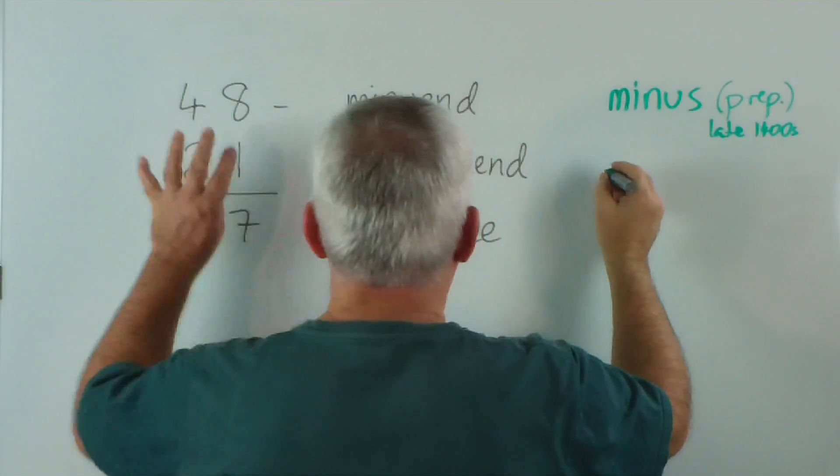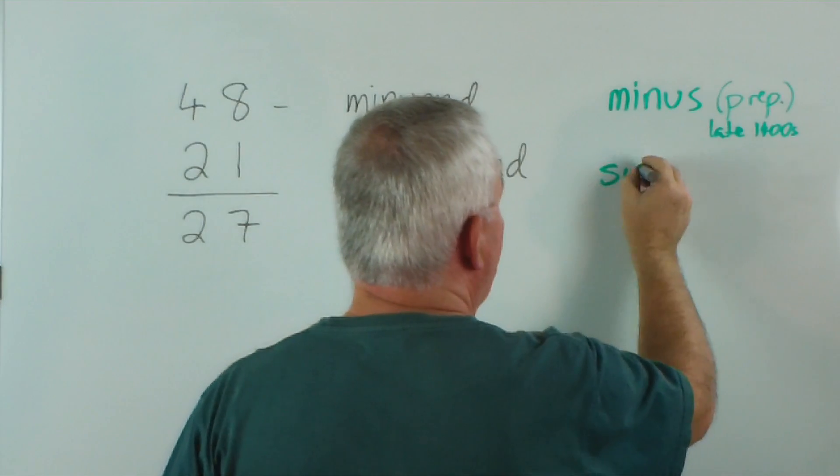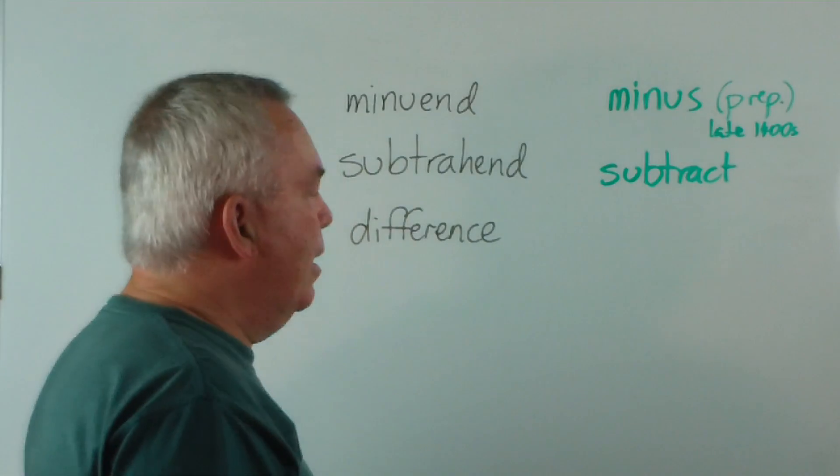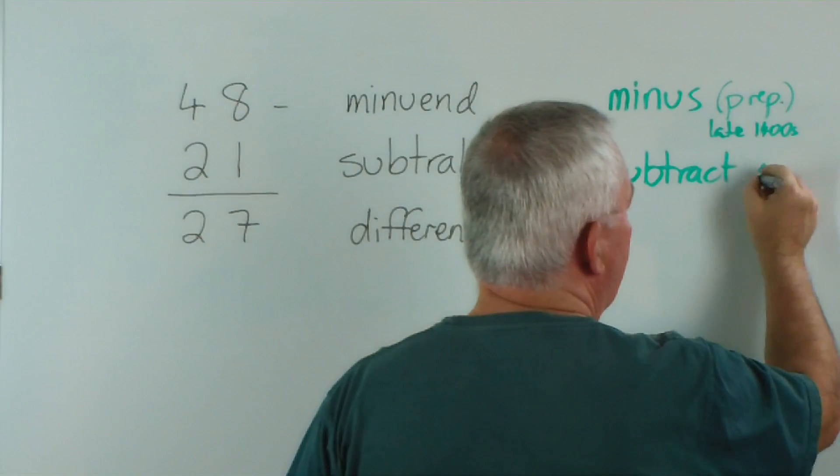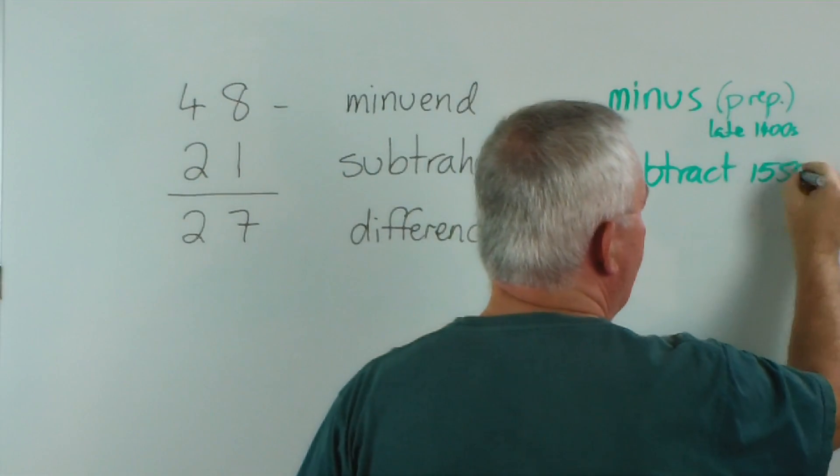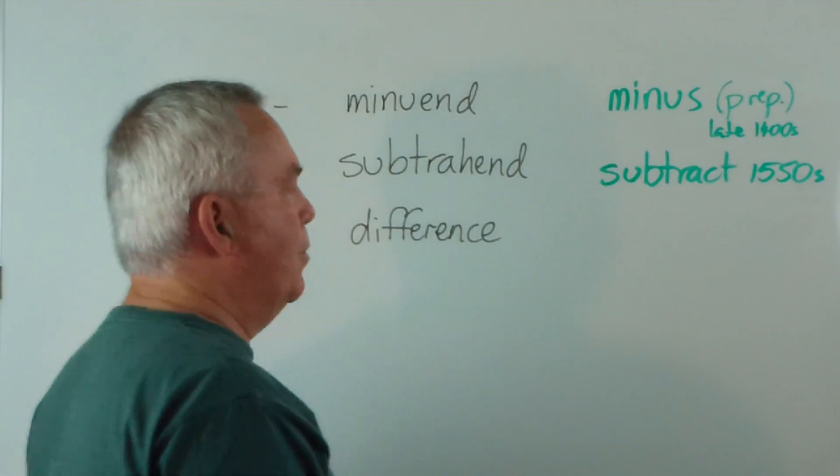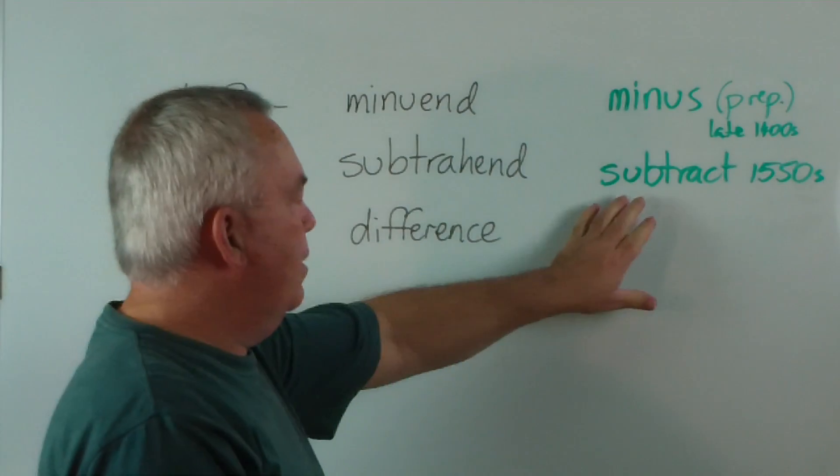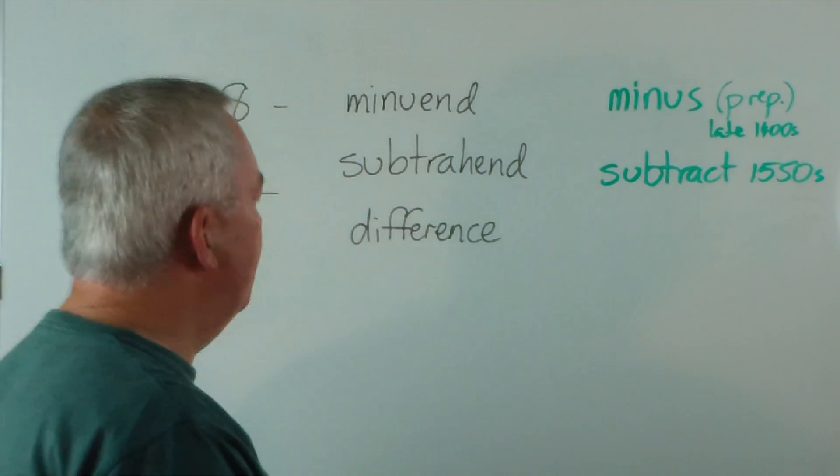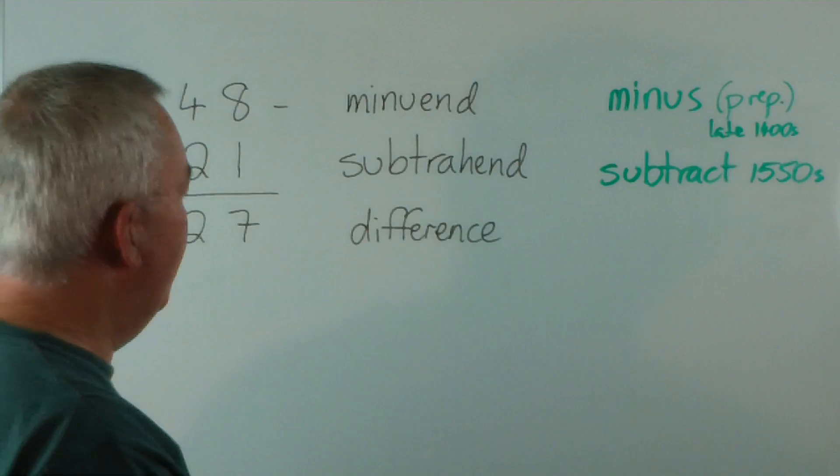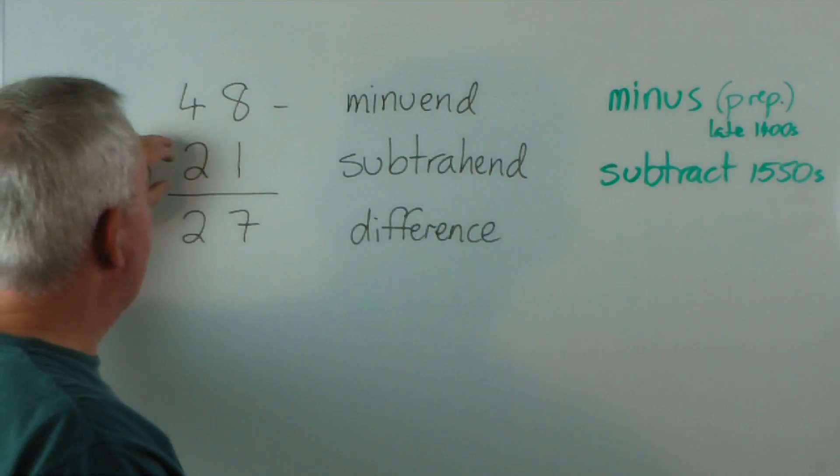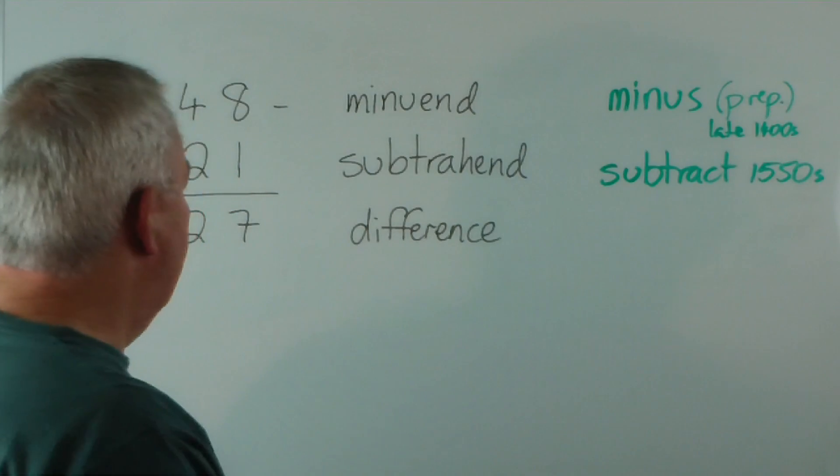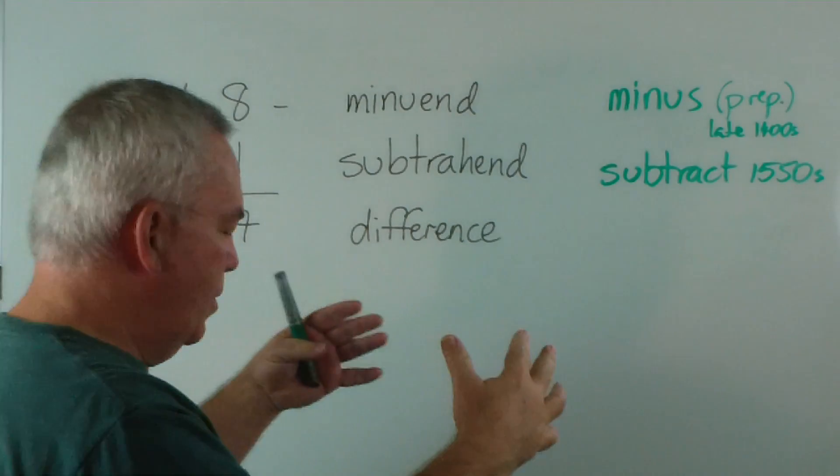The word that came next was the word describing the operation. And this number came about around the middle of the 1500s, around the 1550s, somewhere. The best of my research. Now, the word subtract or subtraction... The word subtract is a verb. And we would say subtract 21 from 48. That's the instruction. And the word subtract means to...